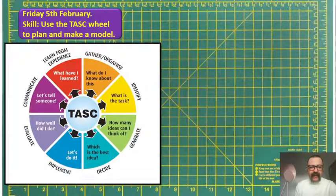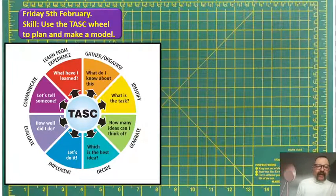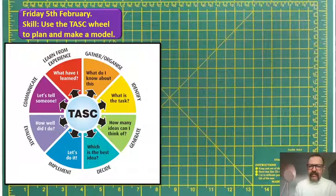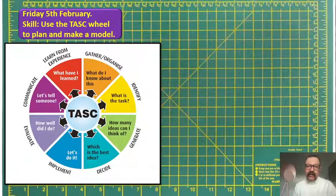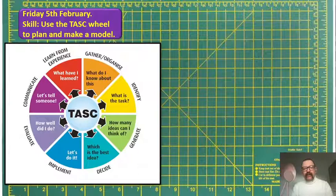We're going to be designing something, and if you've looked at the skill, you're going to be making a model. So how's the task wheel going to help us? I'm not sure if some of you may have come across the task wheel before. I use it a lot — I use it at home as well. If I'm making anything, I run through this wheel. It organises my brain. Before I have a project to make something, I go through all of these statements and questions.